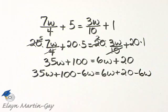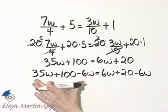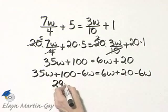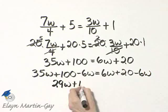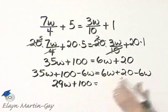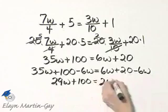Notice what we have on the left side, we have these two like terms, 35 minus 6, that's 29w plus 100, is equal to, these terms subtract out just like I want, is equal to 20.